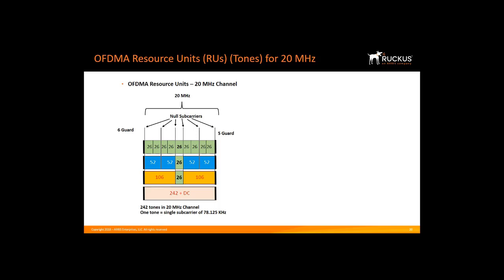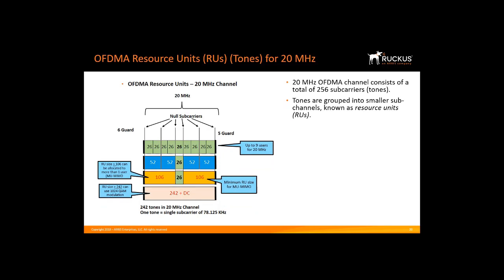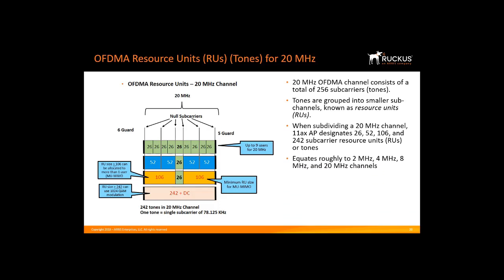Let's look at how OFDMA subdivides a 20 MHz channel into smaller frequency allocations based on multi-user traffic needs. The AP decides how to allocate the channel, always assigning all available resource units on the downlink or uplink. The 20 MHz OFDMA channel consists of a total of 256 sub-carriers, grouped into resource units with a minimum size of 26 carriers, accommodating up to 9 users per 20 MHz. When subdividing a 20 MHz channel, the 11ax AP designates 26, 52, 106, and 242 sub-carrier resource units, equating roughly to 2, 4, 8, and 20 MHz channels respectively. The AP dictates how many RUs are used and different combinations can be applied.